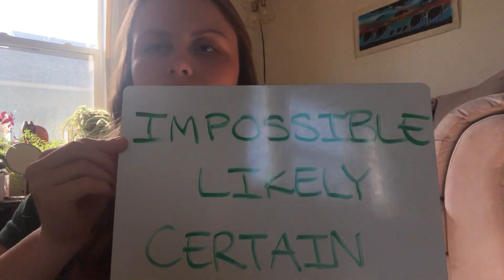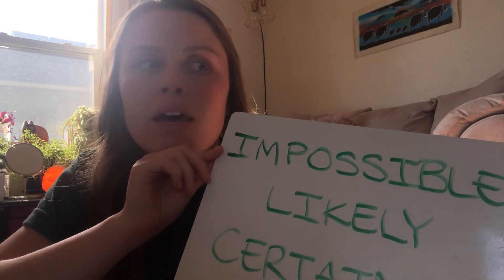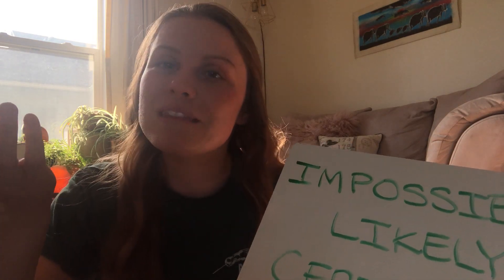Let's use some examples. It is impossible for me to be 12 years old because I'm 22 and there's no way I can change my age. It's also impossible for me to be in Australia right now. Those are things that are impossible because there's no way they're going to happen at this moment.